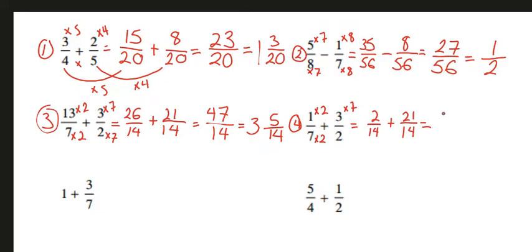2 plus 21 will be 23 over 14. 23 goes into 14 one time, and there will be a remainder of 9 out of 14.